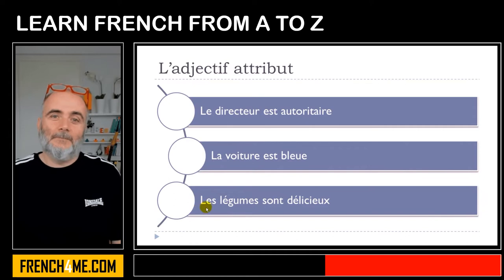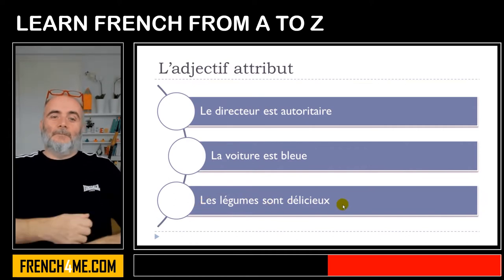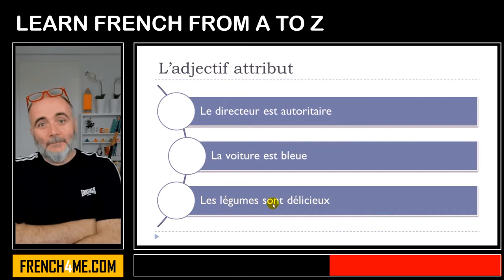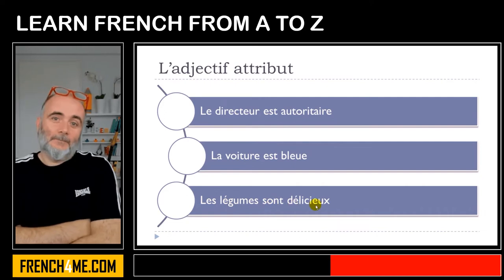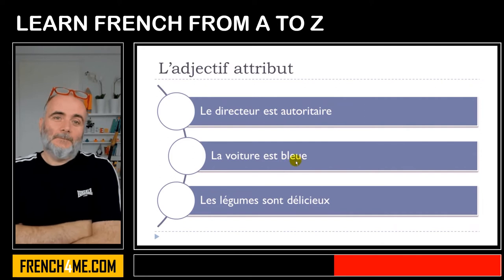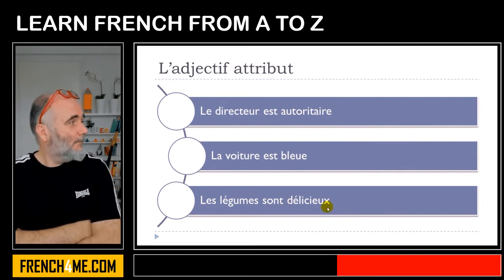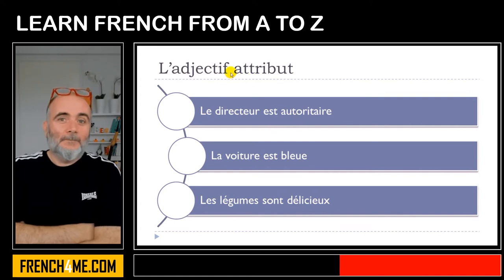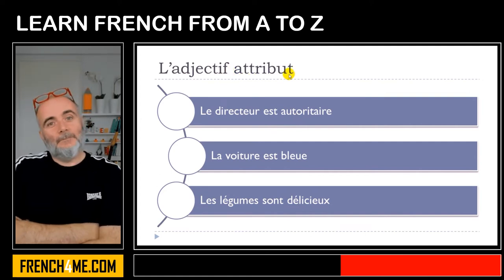And then les légumes sont délicieux. So in all these cases — autoritaire, bleu, and délicieux — these adjectives, les adjectifs, are what we call adjectifs attributs.